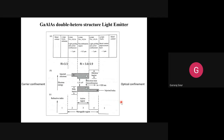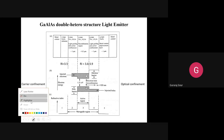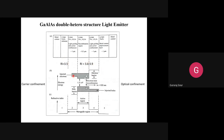One structure already discussed in the last class is the gallium aluminum arsenide double heterostructure light emitter. This is a recap to resolve any doubts. It consists of three parts shown in the figure — sections A, B, and C. You have to practice this diagram. The refractive indices shown are for understanding purposes only and will not be part of the drawn diagram. Only the structural box representation is required.